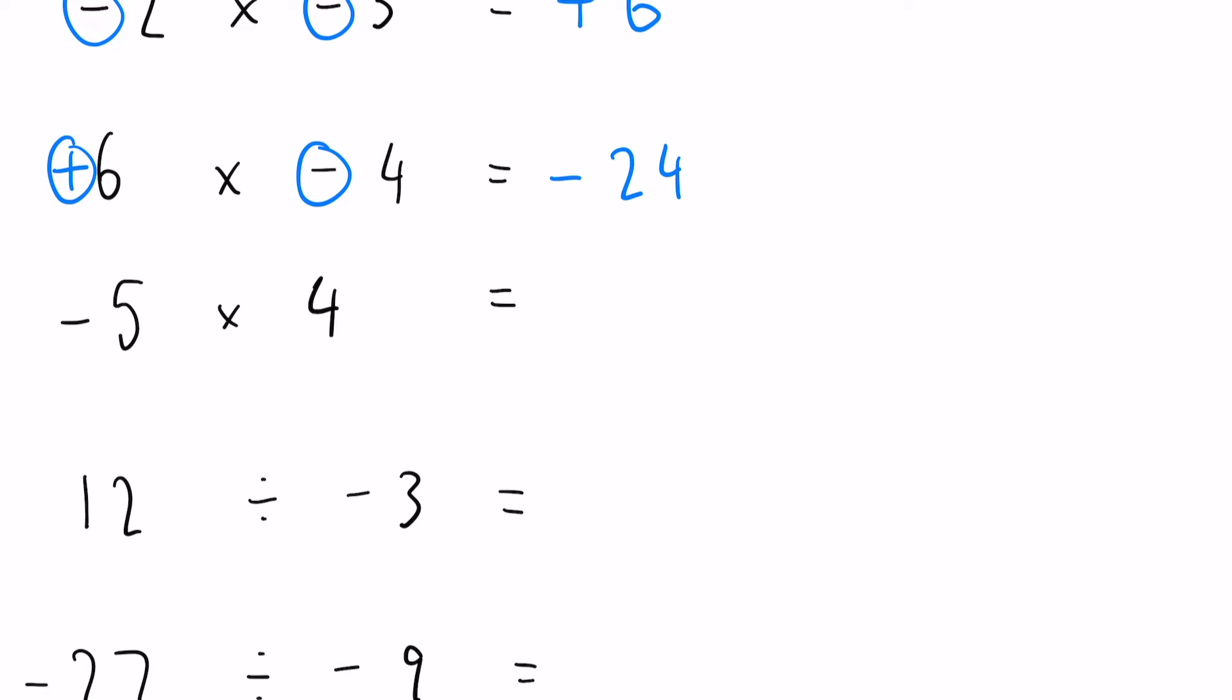Okay minus five times by four, again we have a negative number and a positive number. So when there's no symbol there you can assume that it's positive because that's just what normally happens. So again we have a minus and a positive so our outcome is going to be negative. So five times four, final answer minus 20.